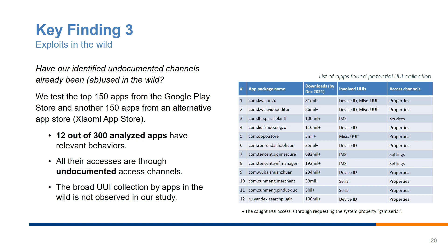Our last key finding addresses whether the identified undocumented channels have already been abused by apps in the wild. We tested the top 150 apps from the Google Play Store and another 150 apps from the Xiaomi App Store. Our findings show that 12 out of 300 analyzed apps have relevant behaviors, and all accesses are through undocumented channels. Fortunately, broad UUI collection by apps was not widely observed in our study.